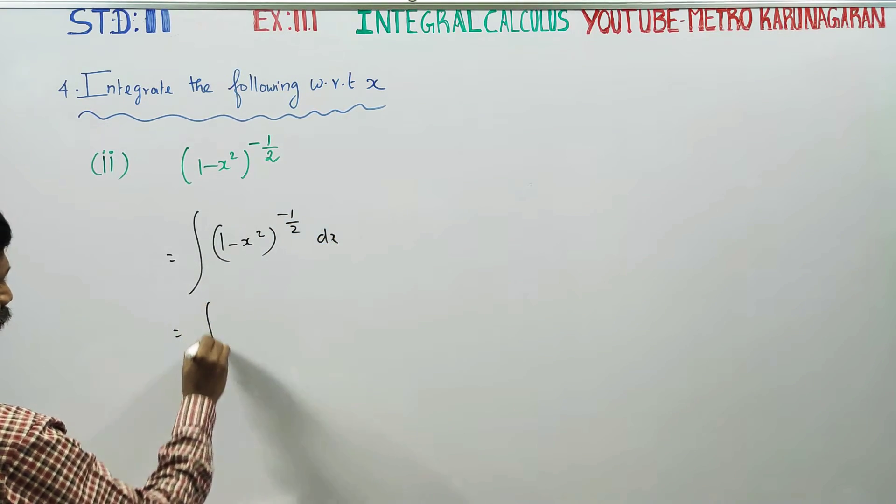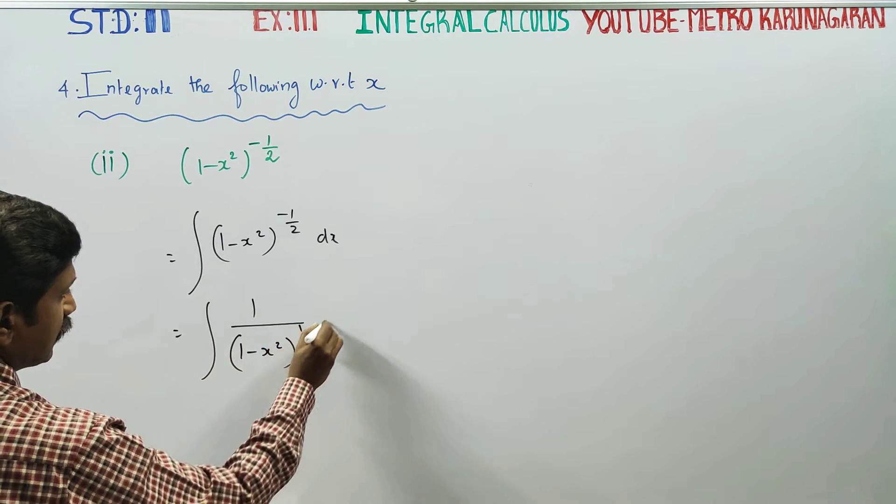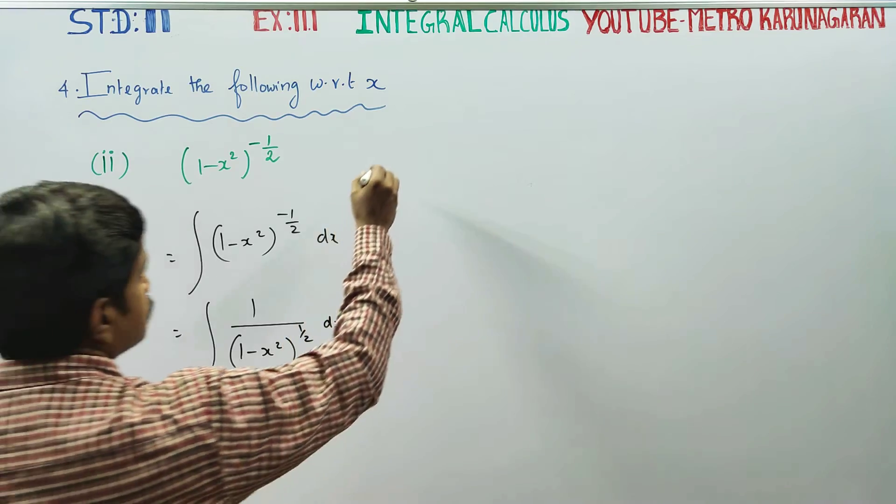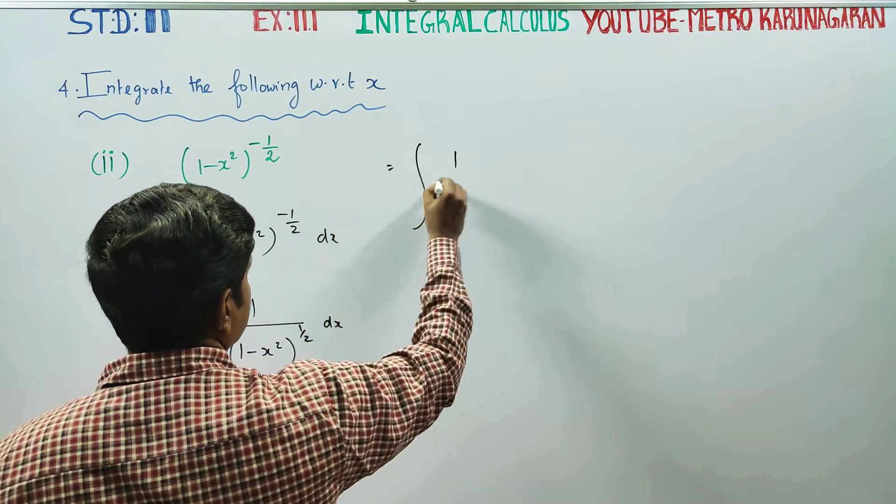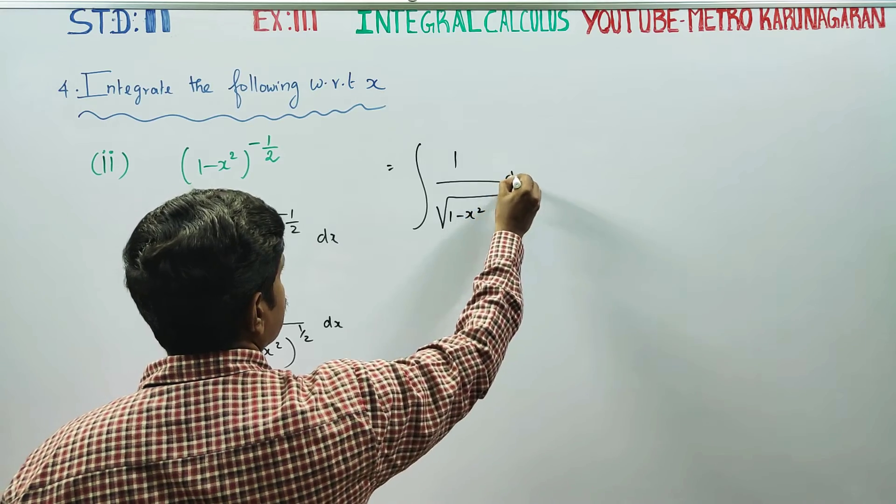This can be written as ∫1/(1-x²)^(1/2) dx. This can be written as the integration of 1/√(1-x²) dx.